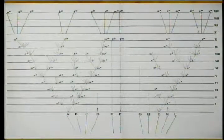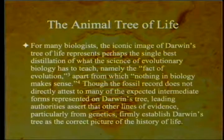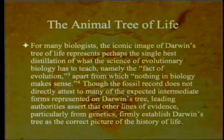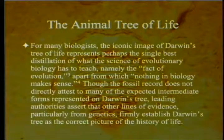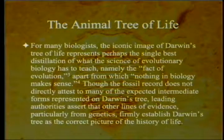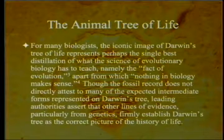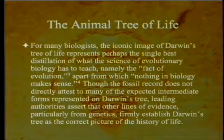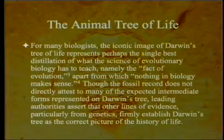For many biologists, the iconic image of Darwin's tree of life represents perhaps the single best distillation of what evolutionary biology has to teach — namely, the fact of evolution, apart from which nothing in biology makes sense. That's the reference to Dobzhansky. The fossil record does not directly attest to many of the expected intermediate forms, but leading authorities assert that other lines of evidence, particularly from genetics, firmly establish Darwin's tree as the correct picture of the history of life.